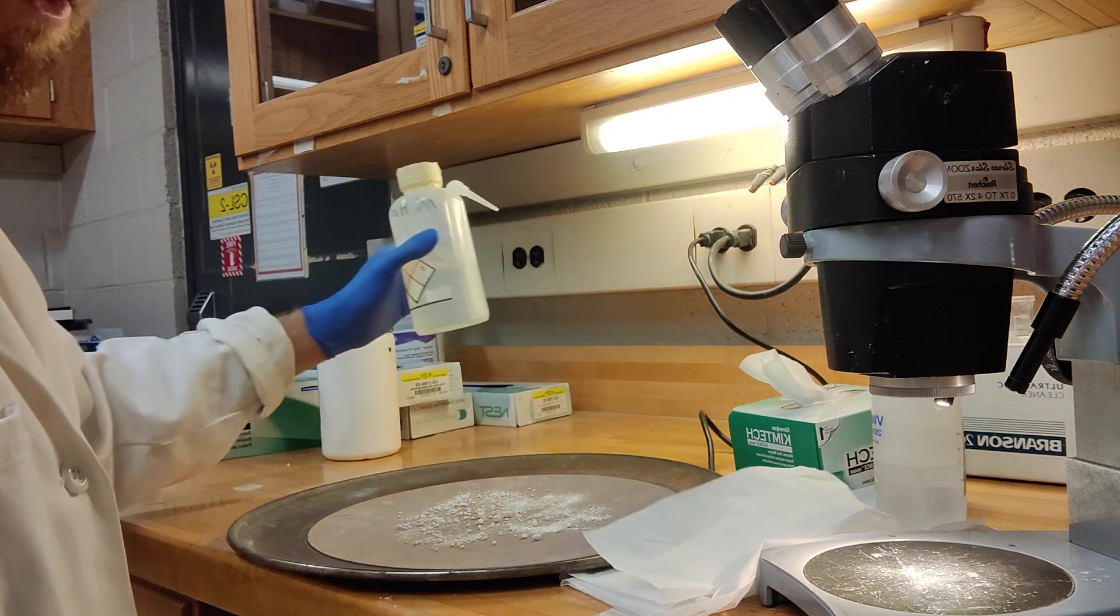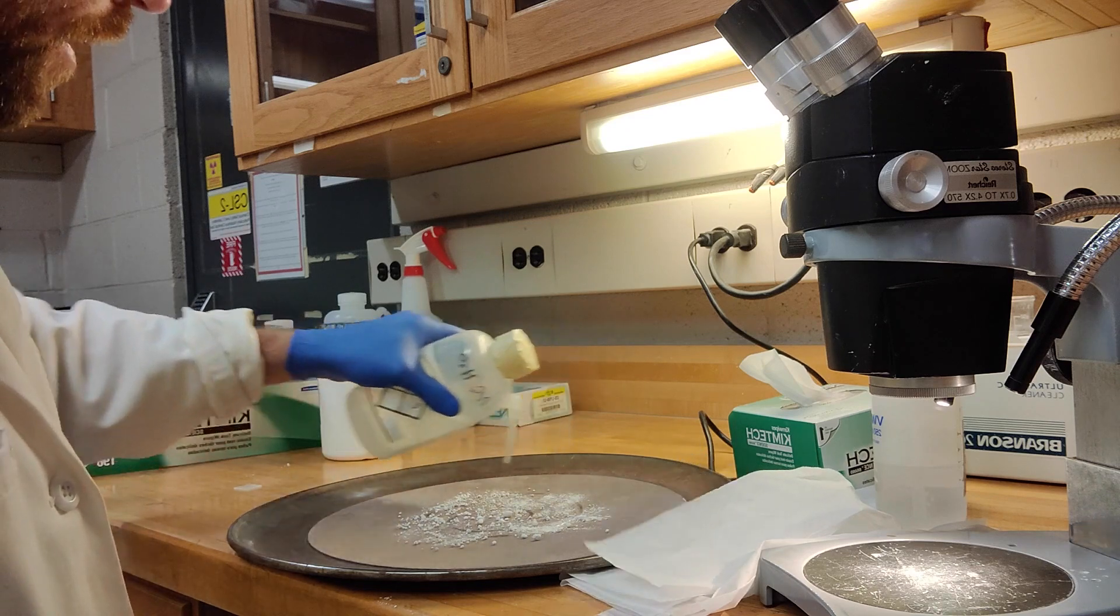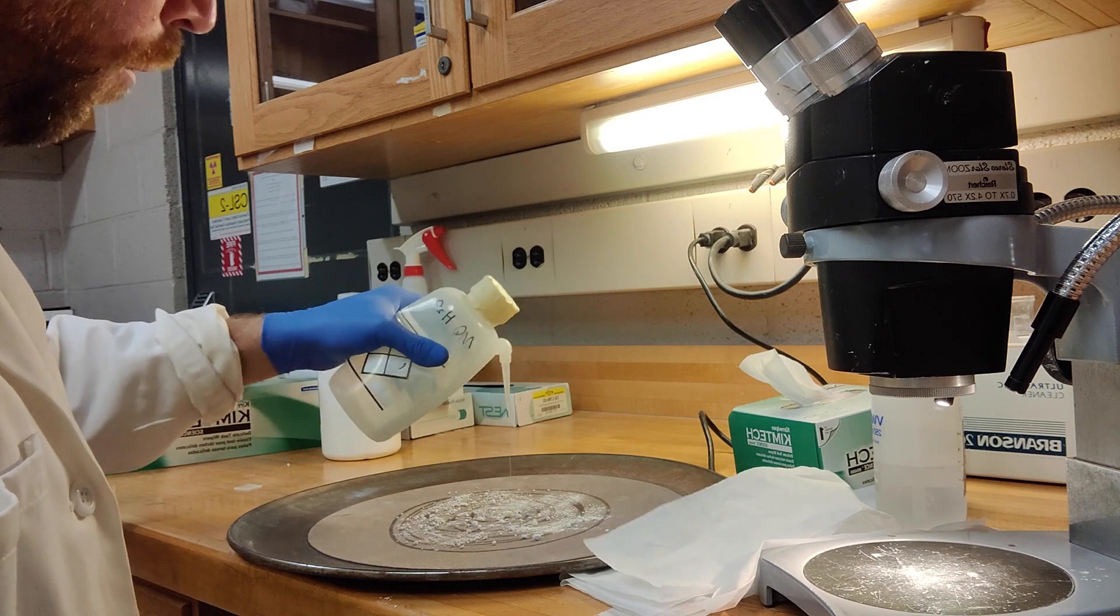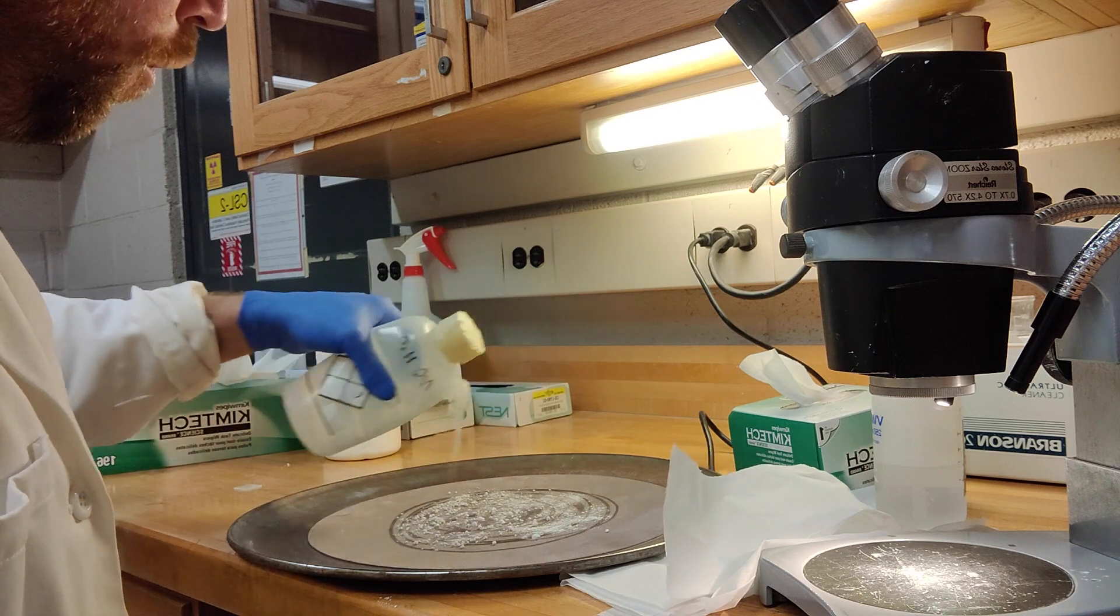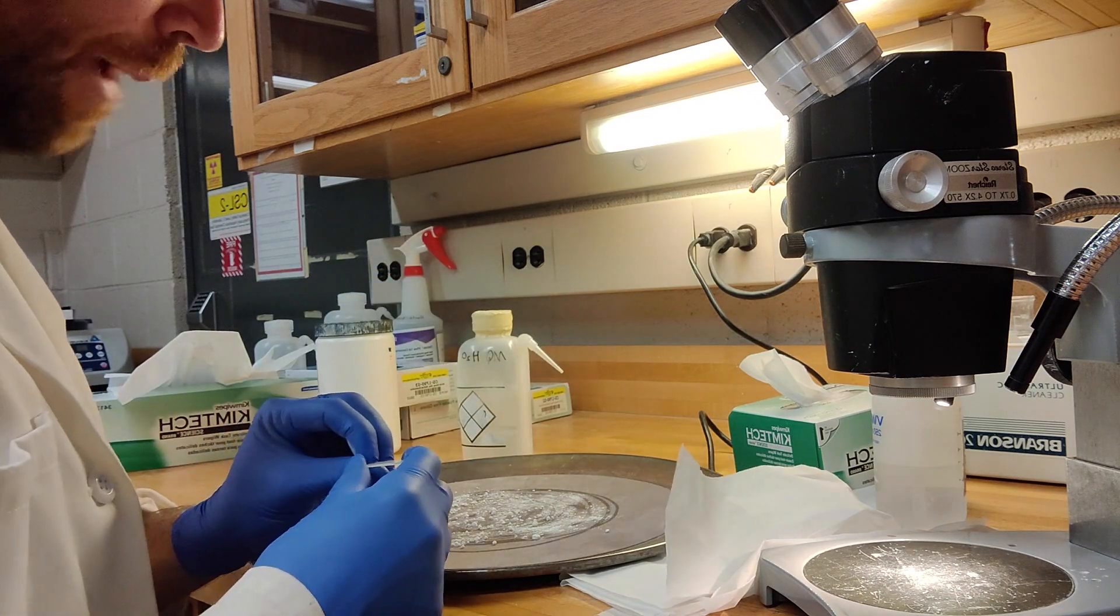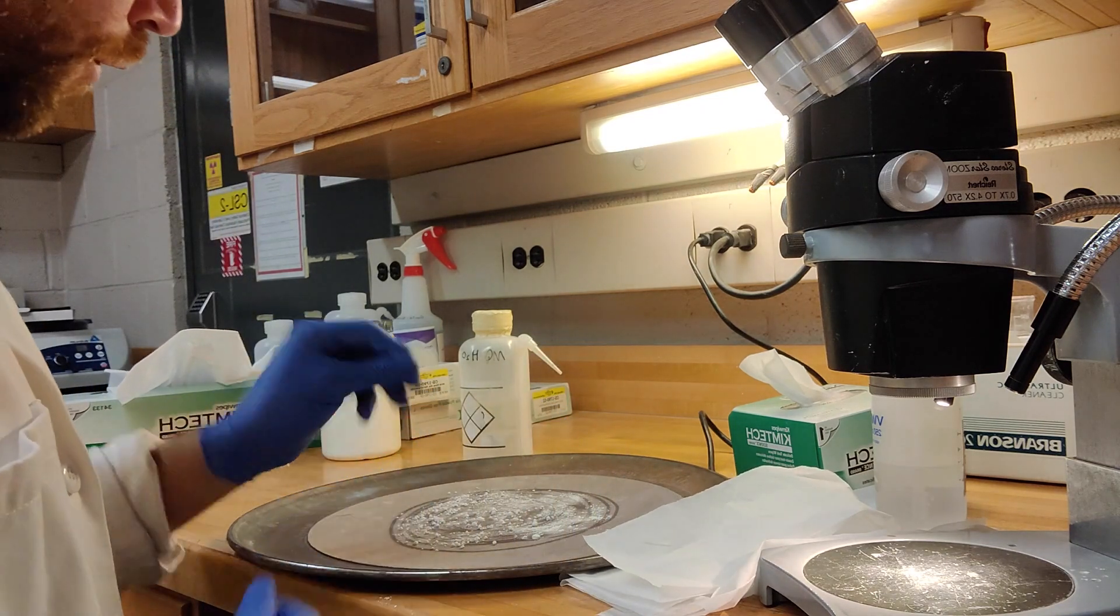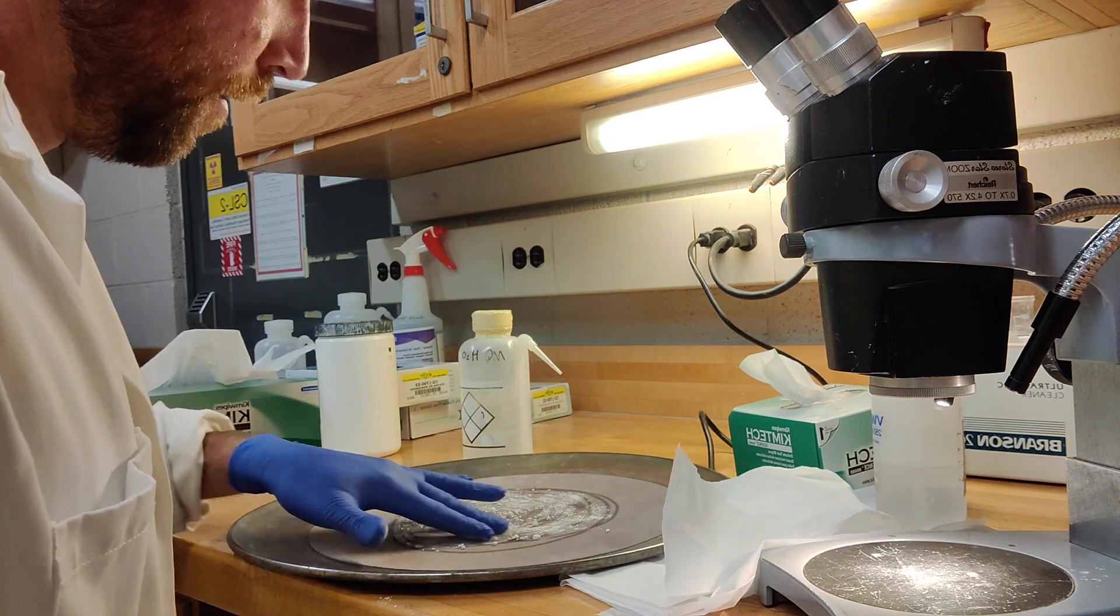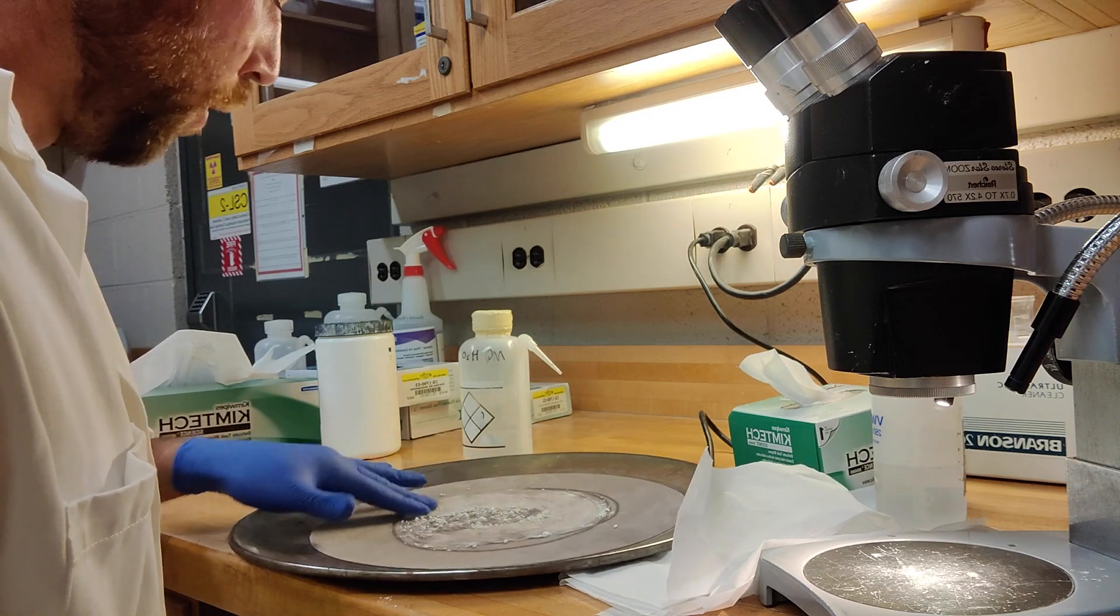And then all you do is take the water and just drizzle it over the micron powder. You can add more water. You want this to be fairly well lubricated. If it starts drying out, add some more water. Unlike the lapping film, you can afford to be a little bit more liberal with the amount of water you use. And then all you do is basically take your little mount and then move it around the polishing cloth.